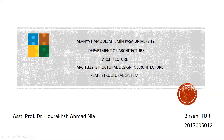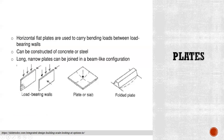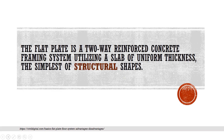Hi everyone. Now I am talking about the plate structural system. Horizontal flat plates are used to carry bending loads between load-bearing supports. It can be constructed of concrete or steel. Long, narrow plates can be joined in a beam-like configuration. The flat plate is a two-way reinforced concrete framing system using a slab of uniform thickness with the simplest of structural shapes.